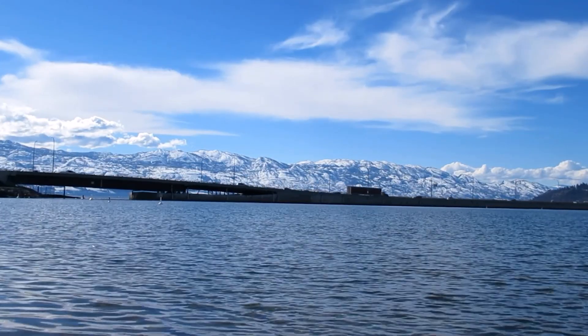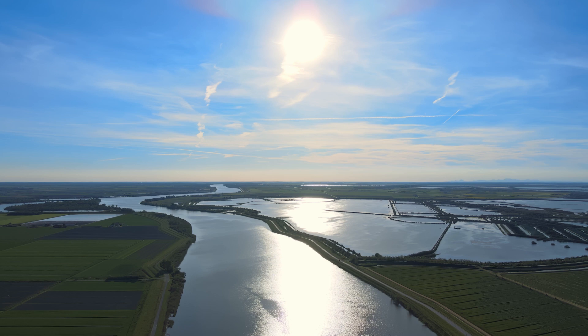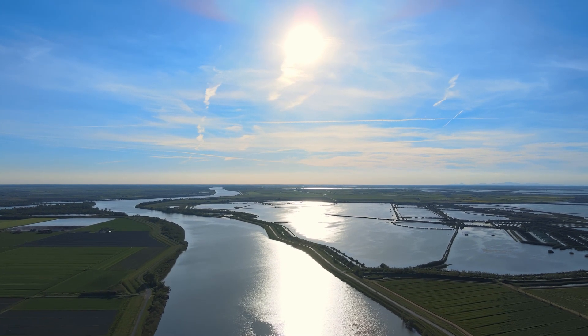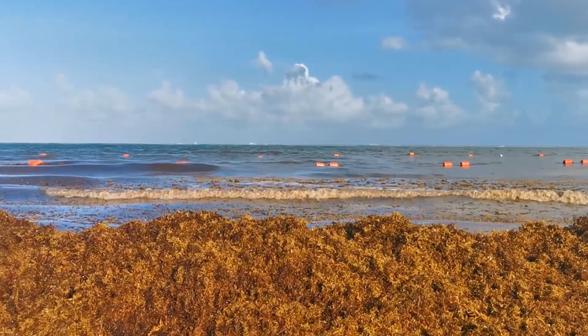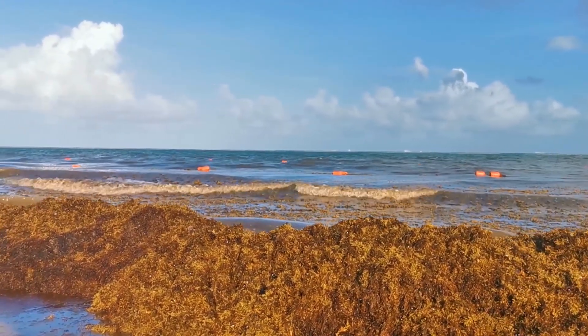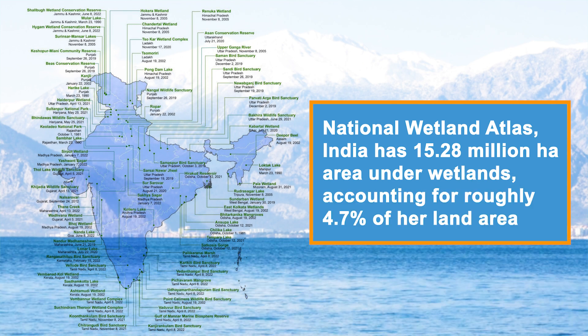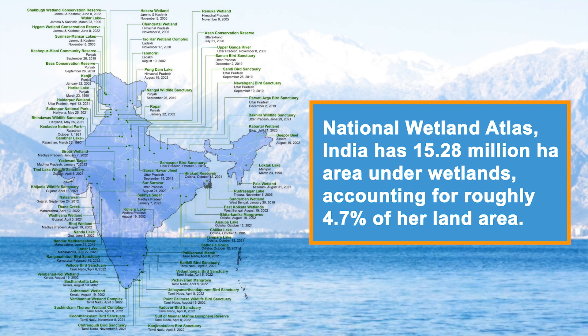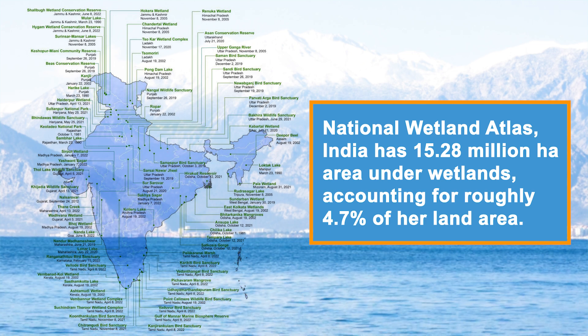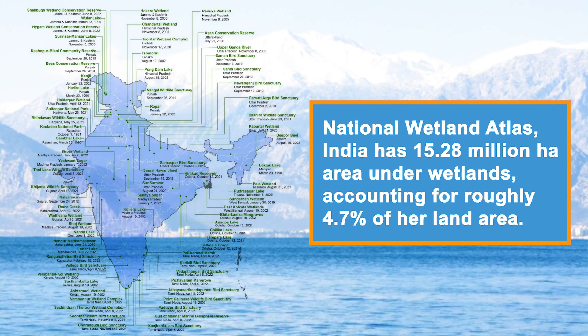Wetlands range from the high altitude lakes of the Himalayas, flood plains and marshes of the Ganga and Brahmaputra alluvial plains, saline flats of the great Indian desert, to extensive marshes and coral reefs bordering the country's coastline and islands. As per the National Wetland Atlas, India has 15.28 million hectares under wetlands, accounting for roughly 4.7% of her land area.